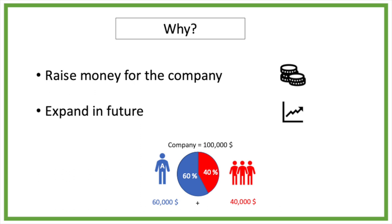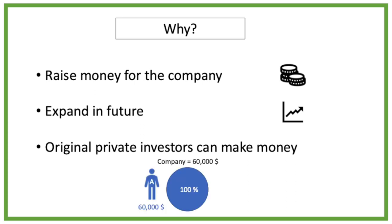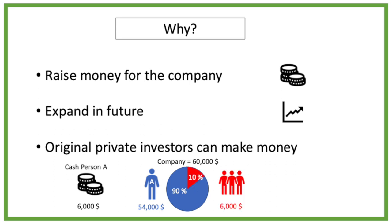Another reason for becoming public is that the original private investors want to sell part of their ownership in the company to earn some money for themselves. For example, person A owns a company with a value of $60,000. Person A decides to sell 10% of its company to investors so person A can earn money. 10% of the value is $6,000. This means that person A will earn $6,000 cash and reduces its ownership to $54,000 or 90%. The other 10% or $6,000 is owned by public investors.